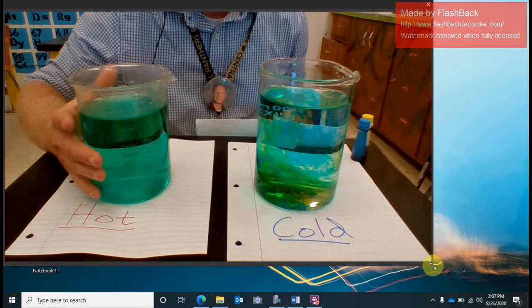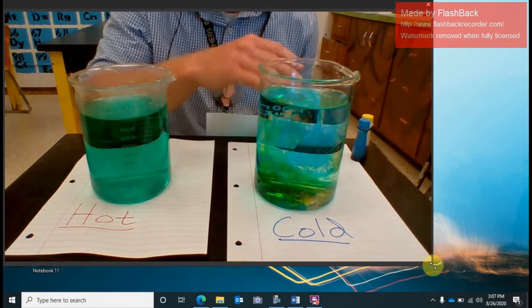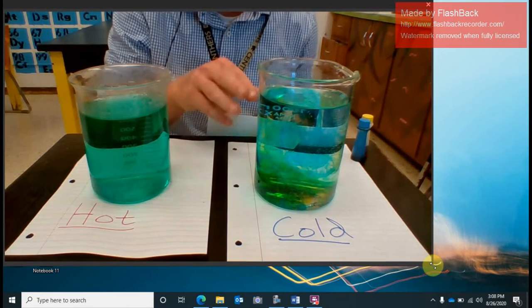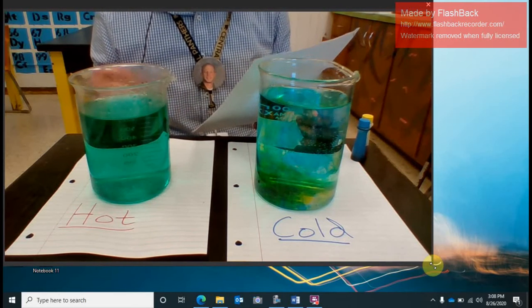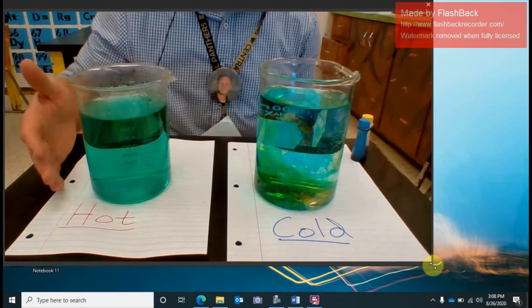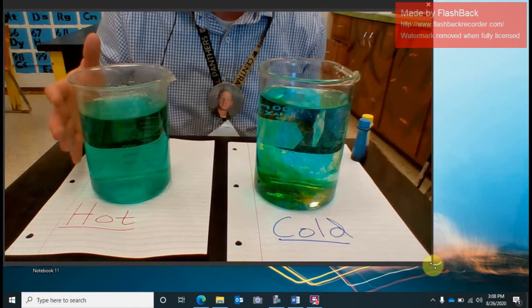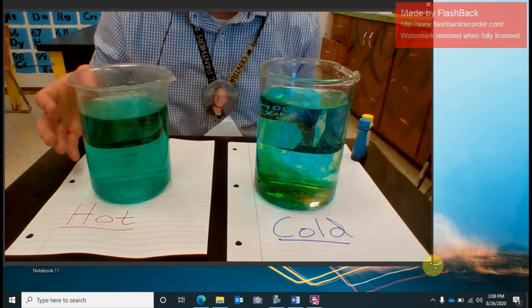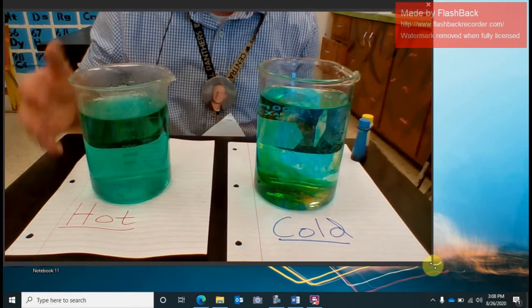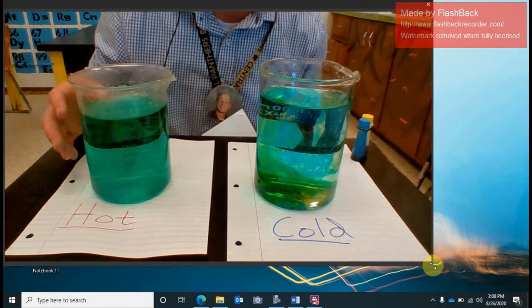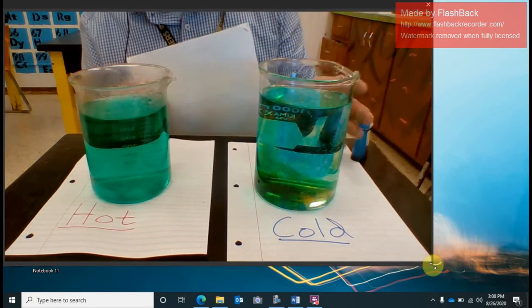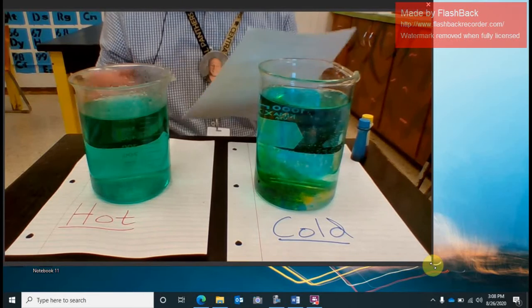But like I said, our hot one, we can see that it's very uniform where this one, we can still see clearness in these wisps. But number three, so let's look at the speed of the molecules. Well, the speed of the molecules in the hot water must be moving faster because this mixing occurred much faster than in the cold ones. So we have faster particles here in the hot water and we have slower particles here in the cold.